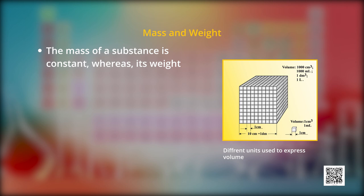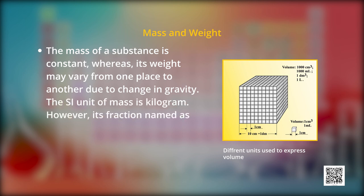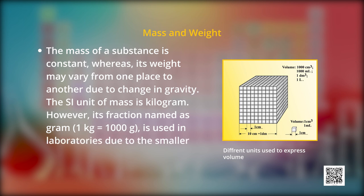The mass of a substance is constant, whereas its weight may vary from one place to another. Friends, do you know why? Yes, because of the change in gravity. The SI unit of mass is kilogram. However, its fraction named as gram—one kilogram is equal to thousand gram—is used in laboratories because of the smaller amounts of chemicals which we use in chemical reactions.